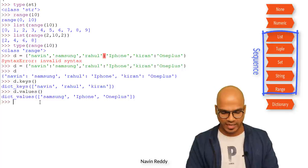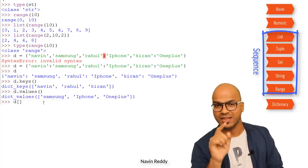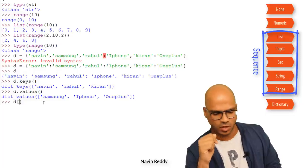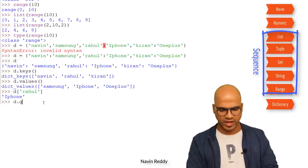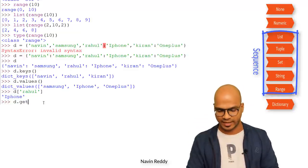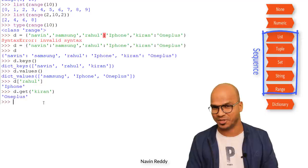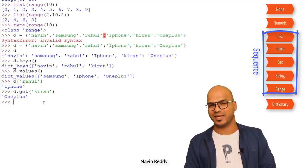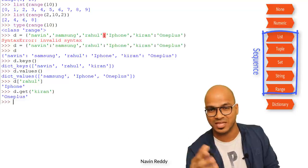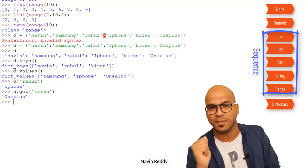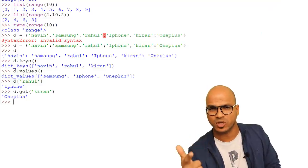To fetch a particular value, I use a key inside square brackets — for example d['rahul'] gives iphone. There's also a get() method: d.get('kiran') returns oneplus. Both approaches work. So to summarize the data types: we have None, numeric types (int, float, complex, bool), sequence types (list, range, set, tuple), string, and mapping (dictionary). I hope it makes sense — let me know in the comments and click like if you're enjoying this series.